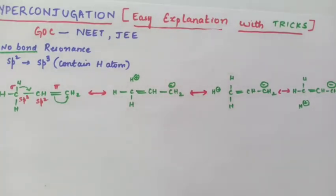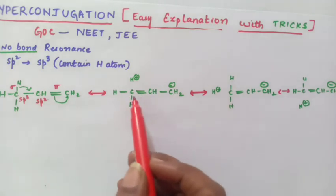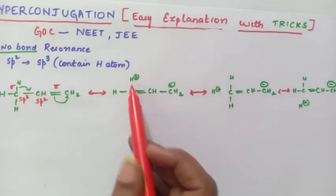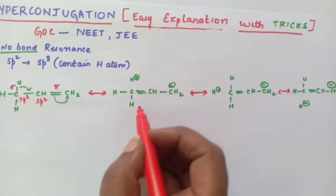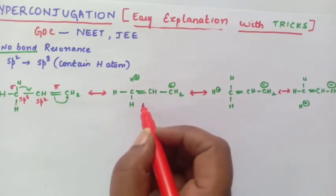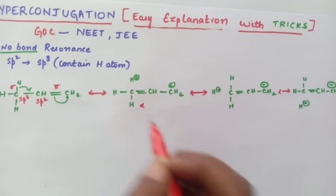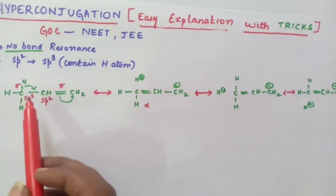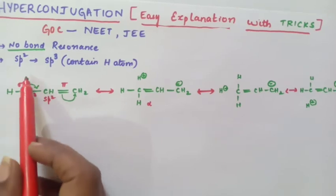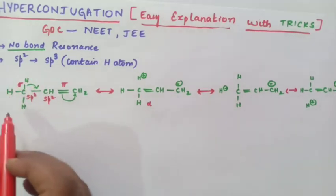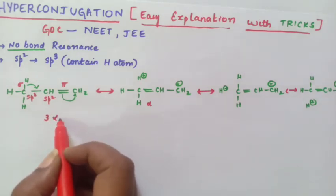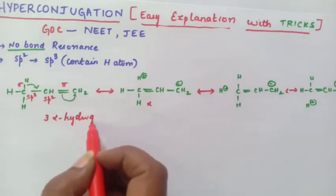The hydrogen atoms that are attached to this carbon — we call them as alpha hydrogen atoms. So these are called as alpha hydrogen atoms. In this molecule, to this carbon three hydrogen atoms are present, which are alpha hydrogen atoms. So in this molecule you can say there are three alpha hydrogen atoms.